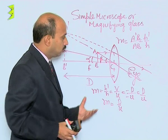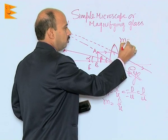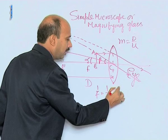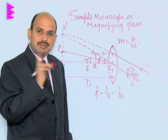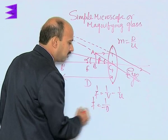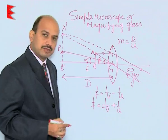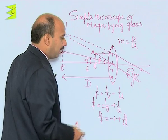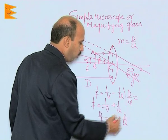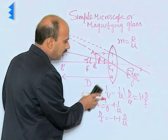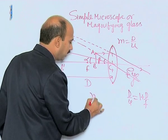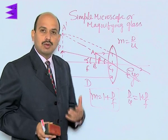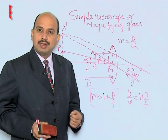We have got m = D/u. We can solve it further by using the lens formula: 1/f = 1/v - 1/u. The final image is obtained at the least distance of distinct vision, so we write 1/f = -1/D + 1/u. Multiplying by capital D on both sides: D/f = -1 + D/u. Then D/u = 1 + D/f. Since D/u = m, we can write m = 1 + D/f. This is the magnifying power of the simple microscope when the final image is at the least distance of distinct vision.